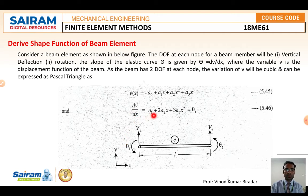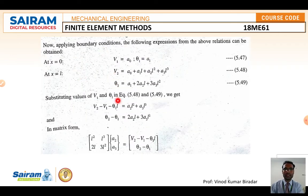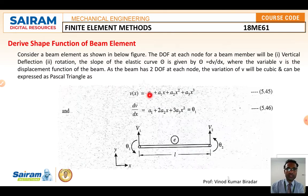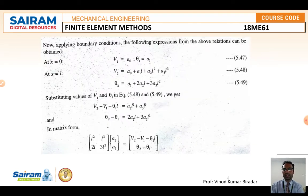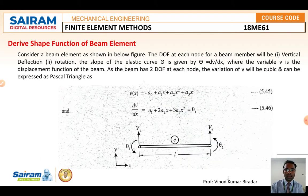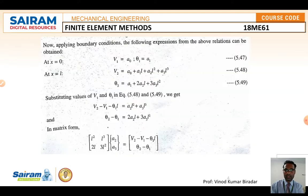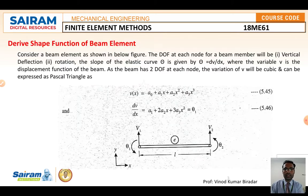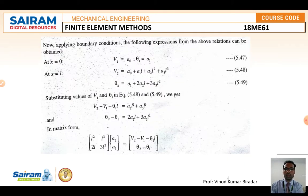Now apply boundary conditions. At node 1, x = 0: v₁ = a₀ and theta₁ = a₁. At node 2, x = L: v₂ = a₀ + a₁L + a₂L² + a₃L³, and theta₂ = a₁ + 2a₂L + 3a₃L². These give us equations 3 and 4 for the nodal values v₁, theta₁, v₂, and theta₂.